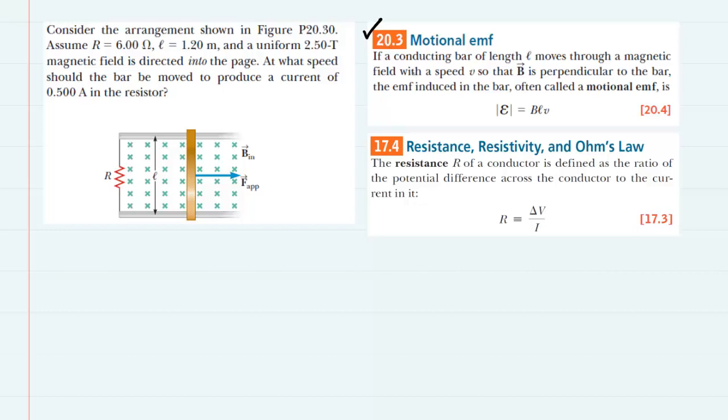It tells us that if a conducting bar of length L is moving through a magnetic field with a speed V, so that the magnetic field is perpendicular to the bar, then the EMF will be induced in the bar, and it is given by this value right here.